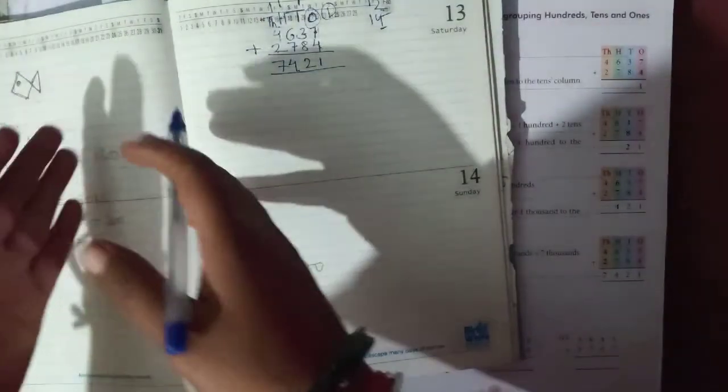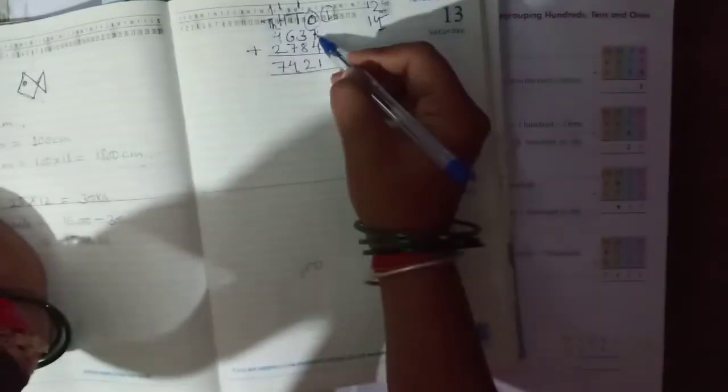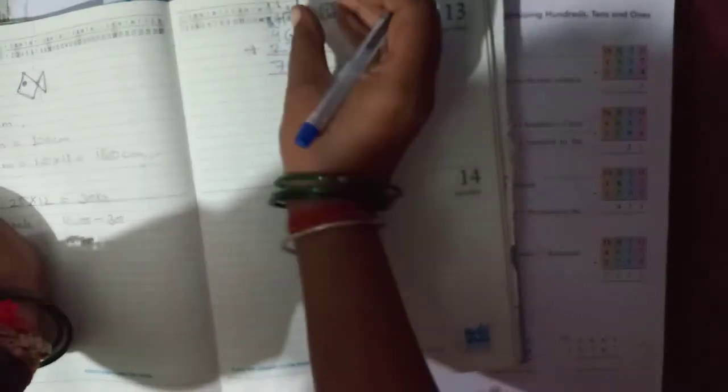So the last number is thousand because there is no lakh number, no ten thousand number. If there are any carry forwarded numbers, you will transfer it to carry forwarded to other side number.